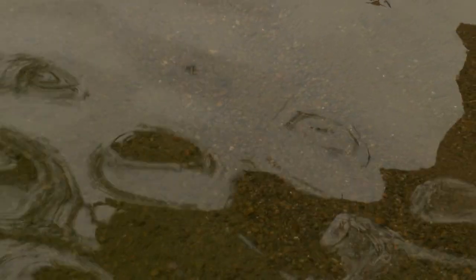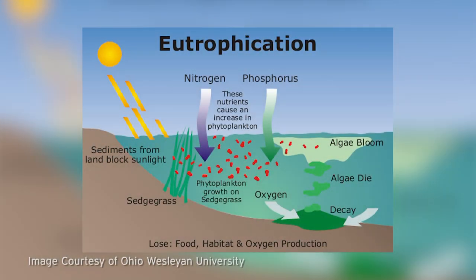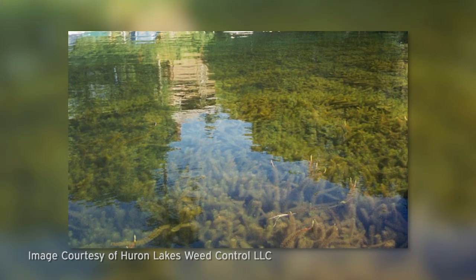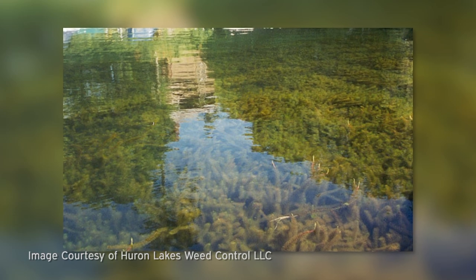Our inland lakes and waterways feed into the Great Lakes, and their water quality is the first step in the water quality of this vast natural resource. Inland lakes and streams suffer a process called eutrophication, which means too many nutrients get into the water. This causes the overgrowth of invasive and natural species, both plant and animal.